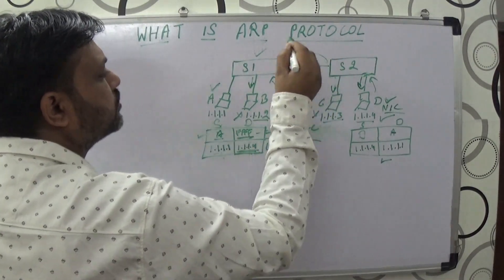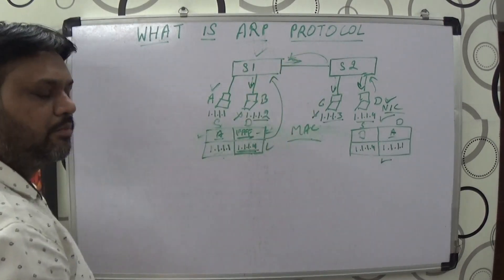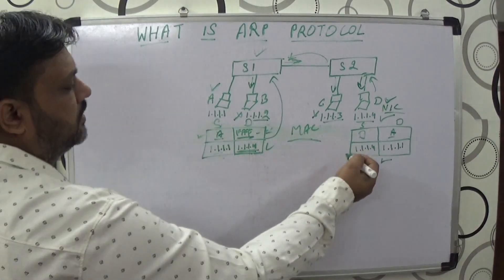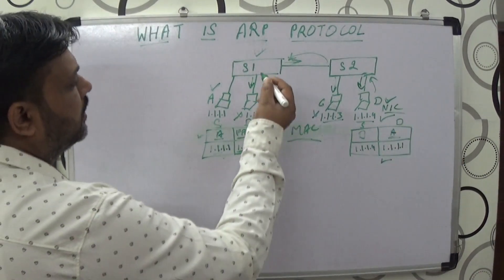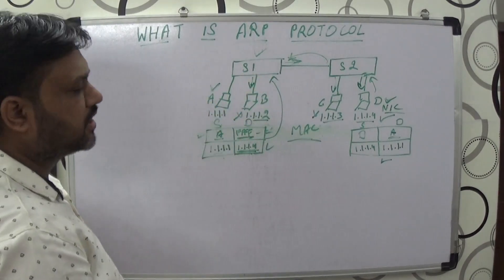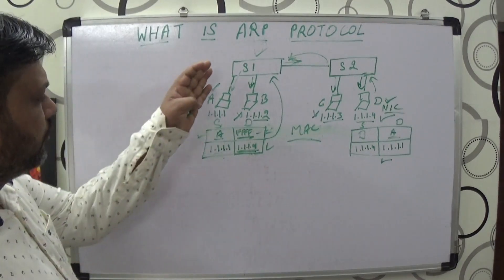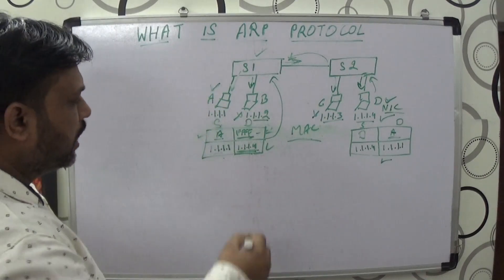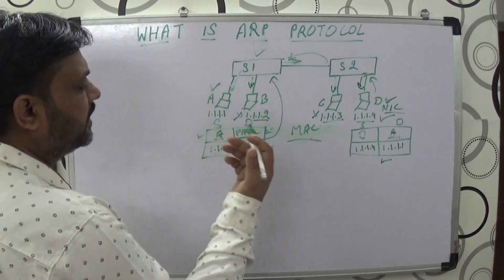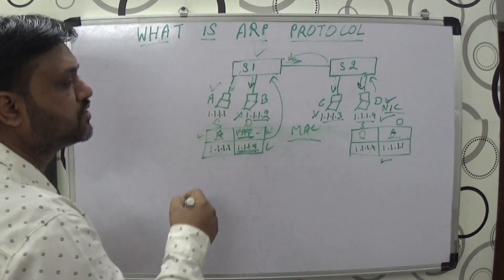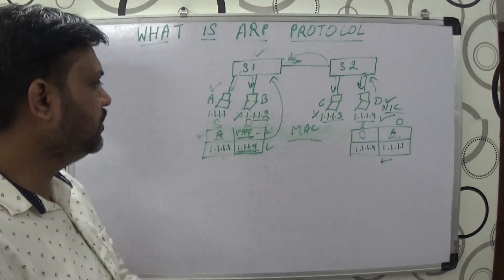Switch number one receives the data frame. It identifies the complete destination MAC address, which is A, and transfers it straight to computer A without broadcasting. Once this complete information reaches computer A, it now knows the destination MAC address, source MAC address, and destination IP address. Computer A is no longer unknown to computer D because it has received the reply from the destination.